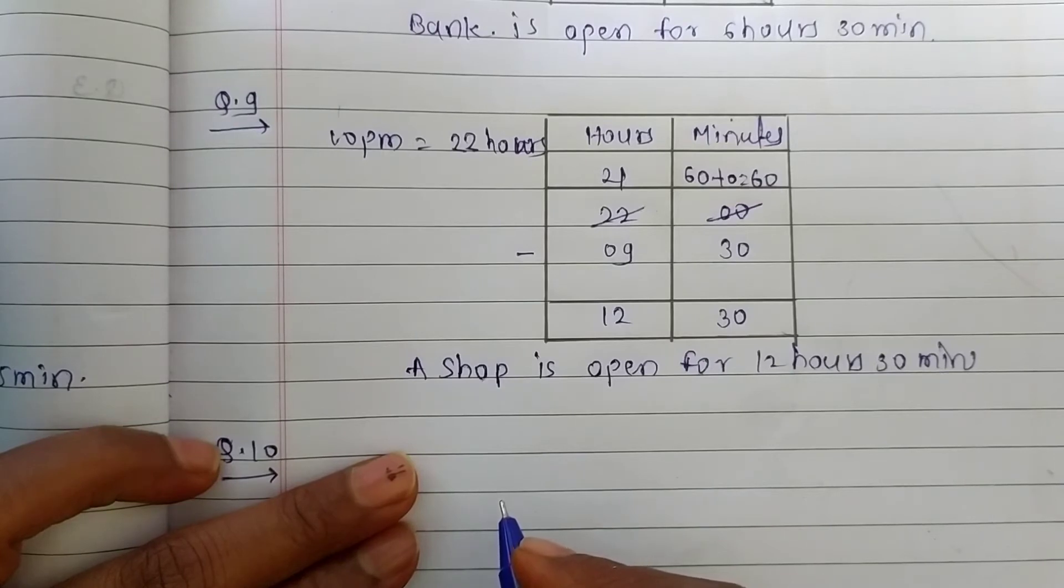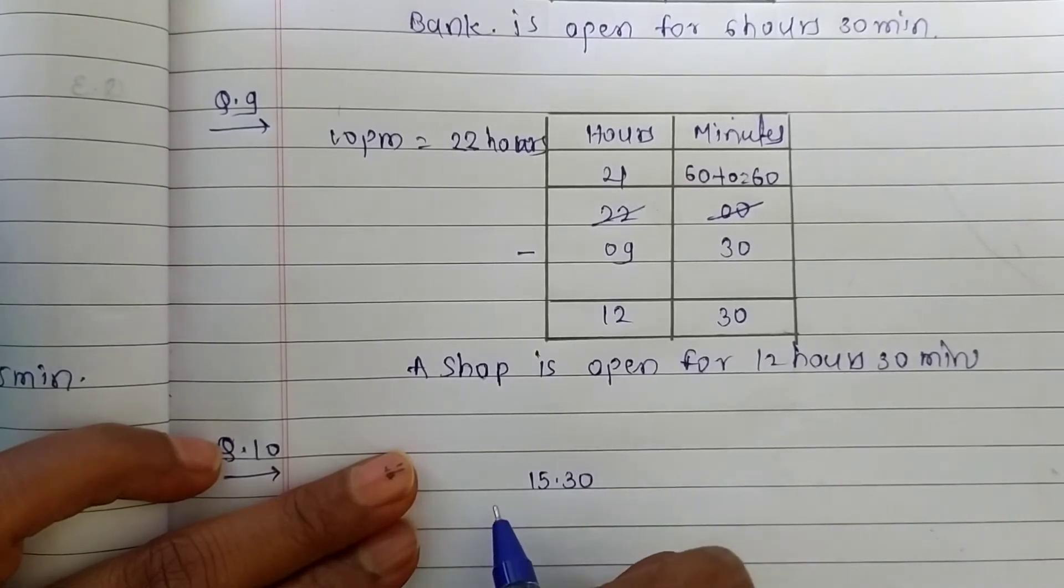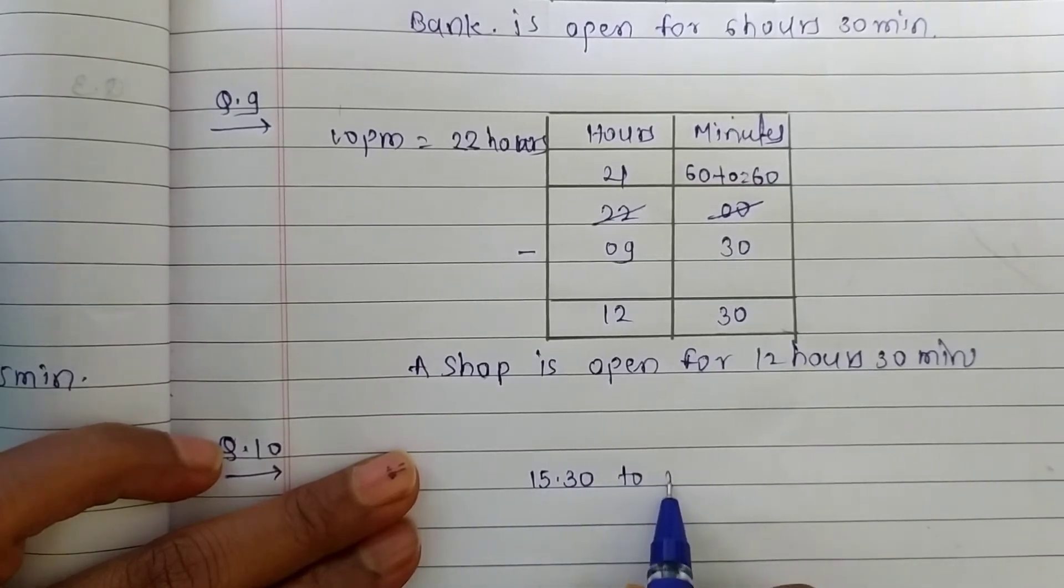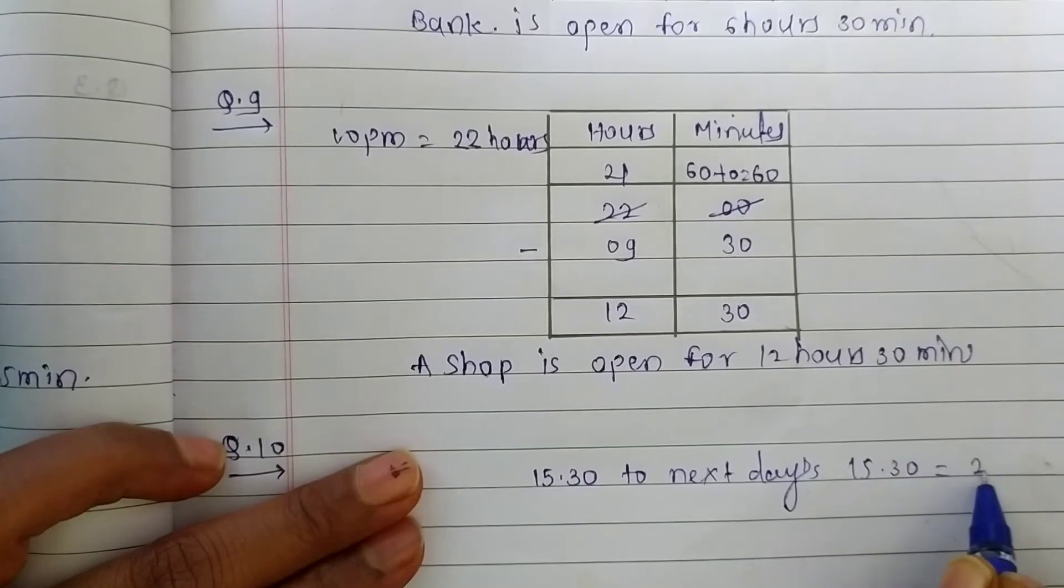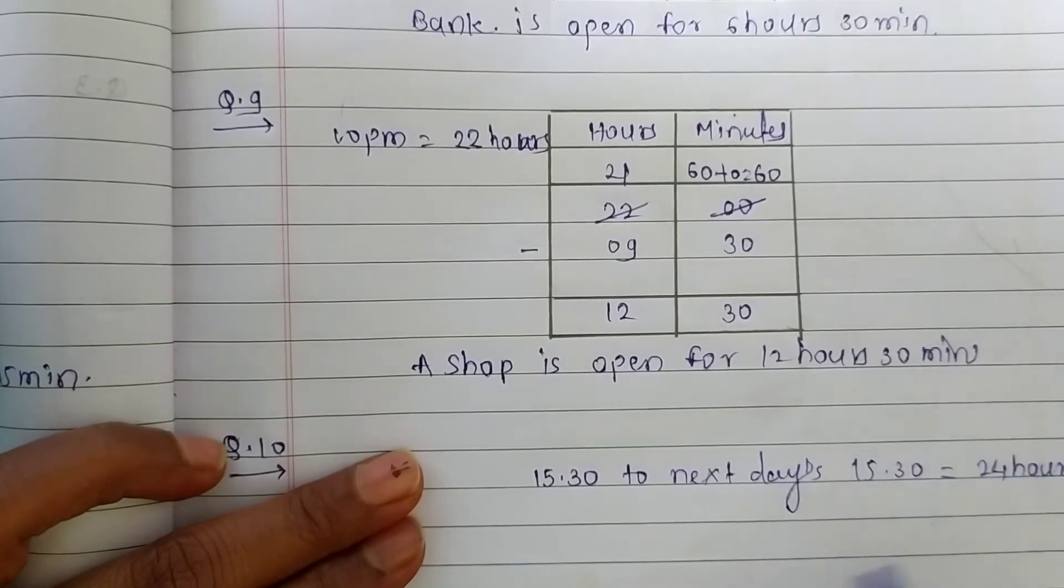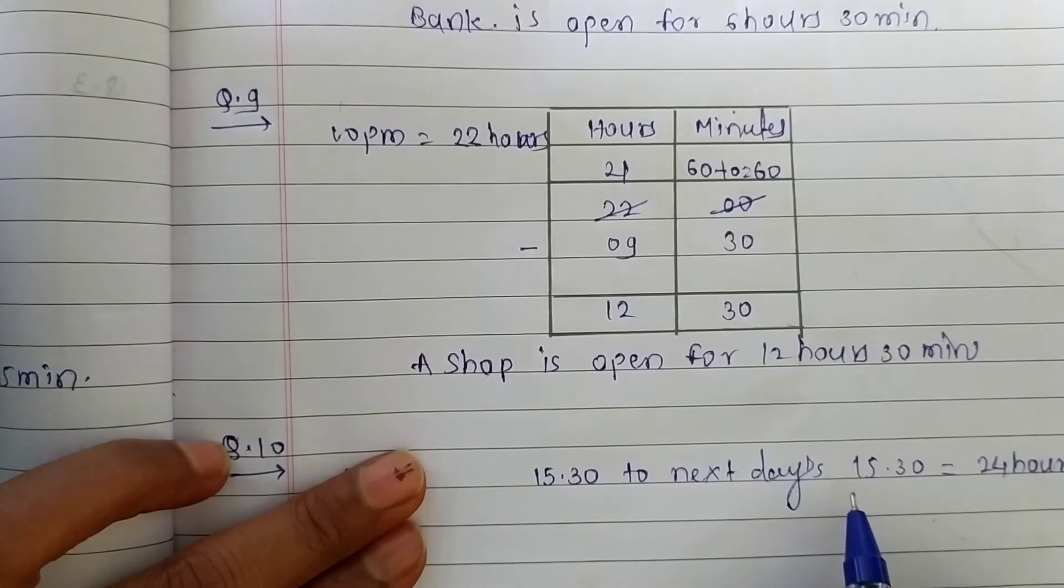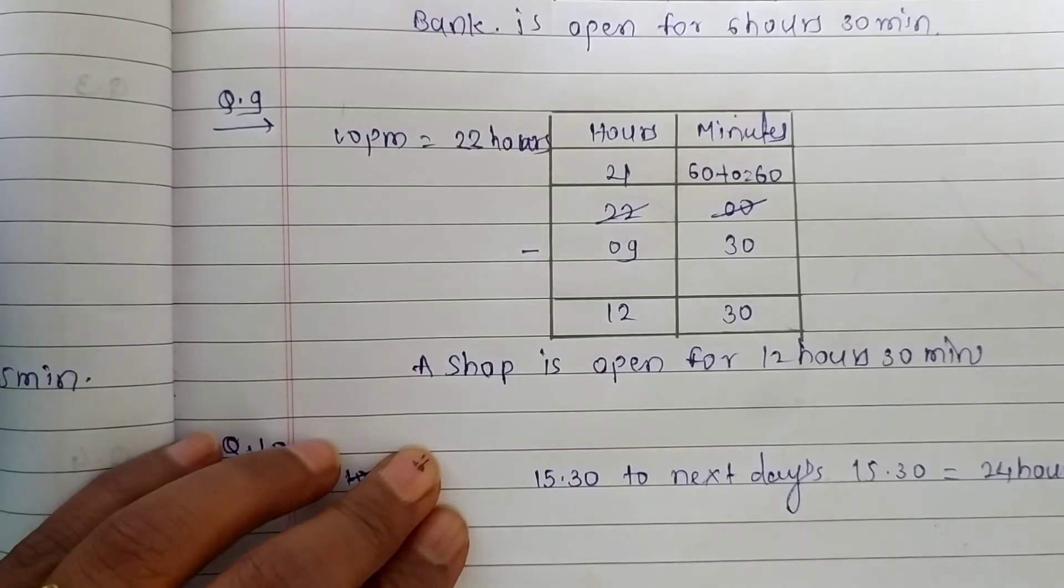So, Maharashtra Express leaves from Kullapur at 15:30 and arrives at Gondhia at the next day at 20:15. So, 15:30 to next day at 15:30, there are 24 hours. Now, look here, we have to calculate the hours from 15:30 to 20 hours and 15 minutes. So, for each, we have to subtract 20 hours and 15 minutes and 15 hours and 30 minutes.